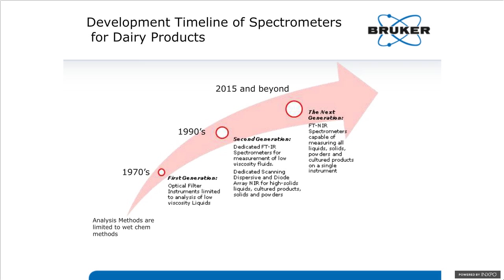The advent of FTIR spectrometers constituted a revolution in infrared spectroscopy, making scans much faster, featuring excellent wavelength accuracy and signal-to-noise ratio. That really allowed people to start getting accuracy and precision competitive with wet chemistry methods for analyzing fluid milk products. Still, you needed different types of instruments to measure solids, milk powders, cultured products, and so forth, which required dedicated near-infrared spectrometers.